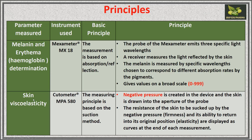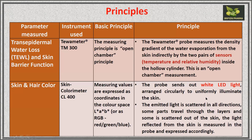For skin viscoelasticity, the instrument is the cutometer and the principle is the suction method — it sucks the skin so that viscoelasticity can be observed. Negative pressure is created in the device and the skin is drawn into the aperture of the probe. The resistance of the skin to being sucked up shows its firmness, and its ability to return to its original position shows its elasticity. Results are displayed as curves at the end of each measurement.